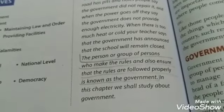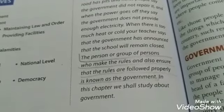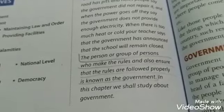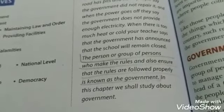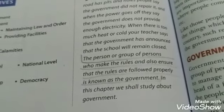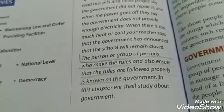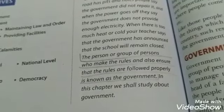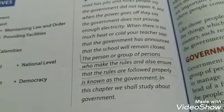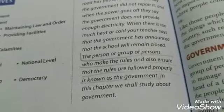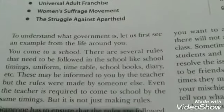तो कम से कम इतना clear हुआ होगा कि government क्या है। Government एक तरह से देखा जाए तो हमारी basic needs के लिए एक system होती है, एक rule and regulation होती है, जिसको government provide करती है।